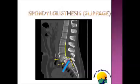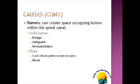Most cases are stable and do not require surgery unless the degree of spondylolisthesis is severe. Tumors can also create space-occupying lesions within the spinal canal. They can be solid or fluid-filled. Solid tumors can be benign, malignant, or even something as simple as a herniated disc, which is more prevalent in younger patients. Fluid tumors can arise from the facet joints and be cystic, or arise from nerve roots and cause compressive lesions in the spine.